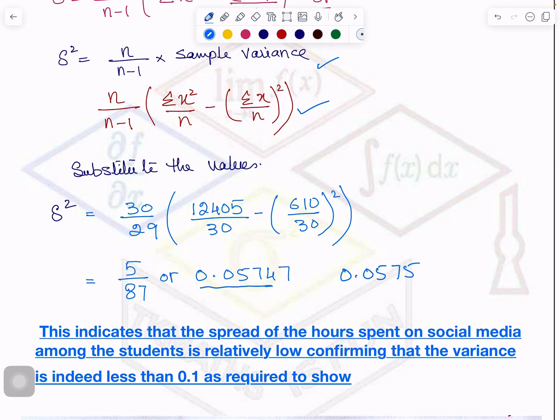This indicates that the spread of the hours spent on social media among the students is relatively low. Variance is low, right? There is very little variance. And it is less than 0.1. This is what we have to prove.